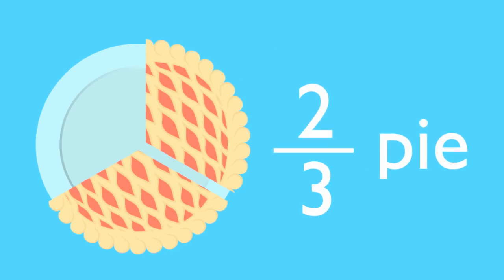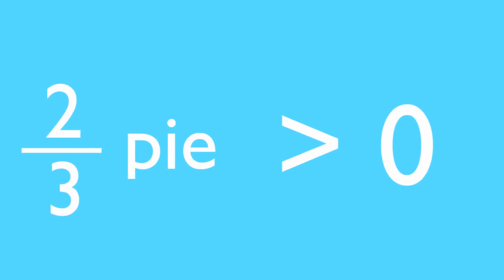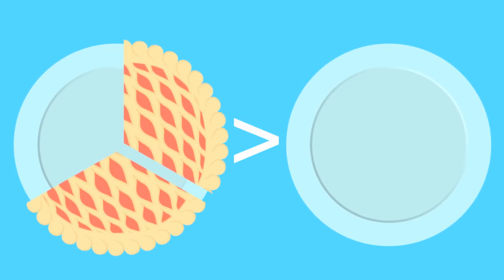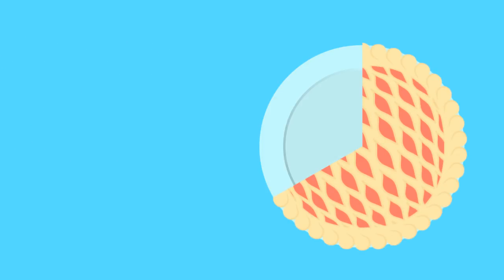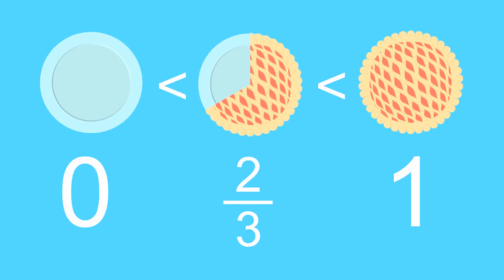How much is 2 thirds of a pie? It's more than 0. 0 means nothing. No pie at all. So we definitely have more than that. It's also less than 1. 1 means a full pie. We don't have that much. We have an amount that's in between 0 and 1.